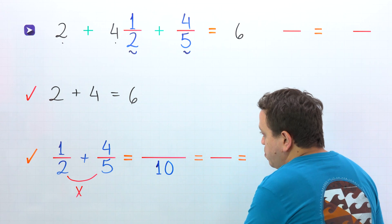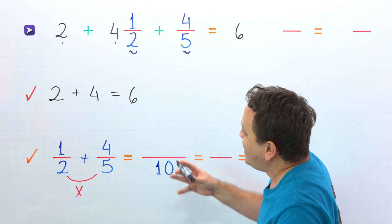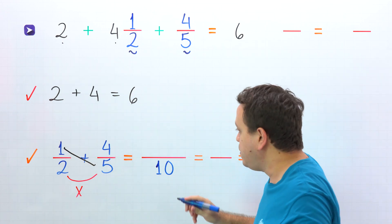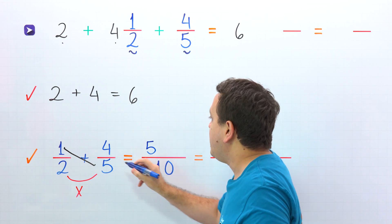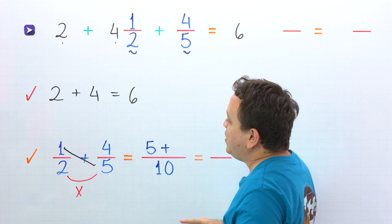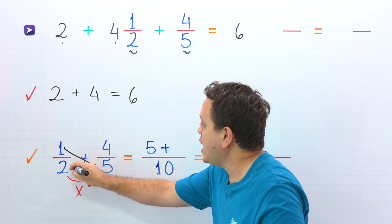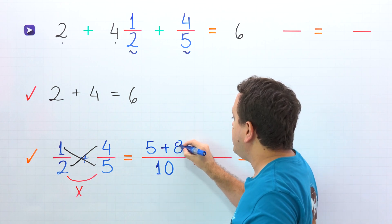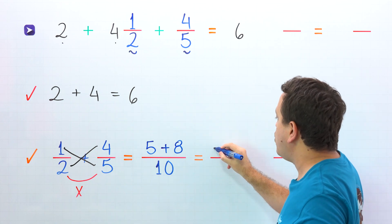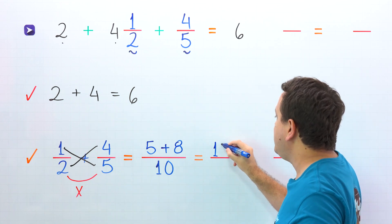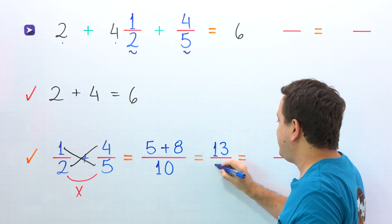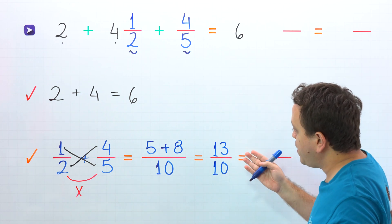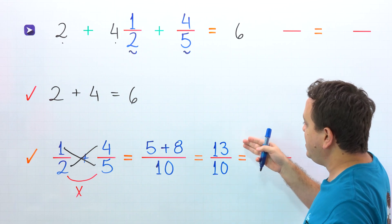Then we need to cross multiply. On this side, we have 1 times 5, and 1 times 5 equals 5. Then comes the plus sign. On the other side, we have 2 times 4, and that gives us 8. Now, 5 plus 8 equals 13, and the denominator stays the same — 10. The sum of the fractions is 13 tenths.